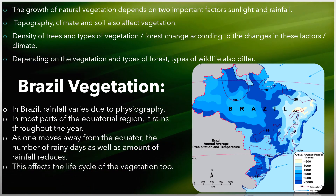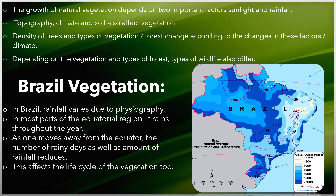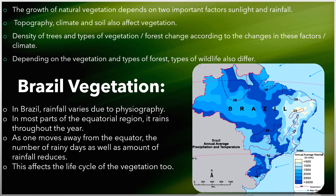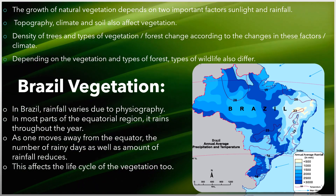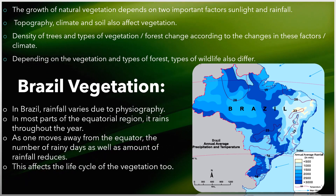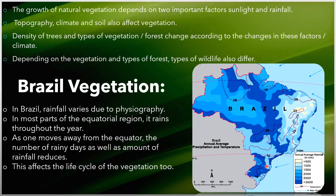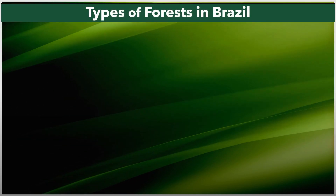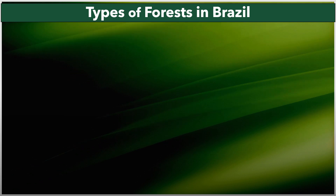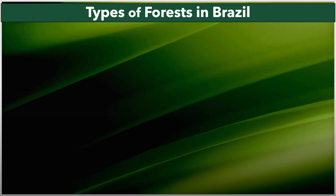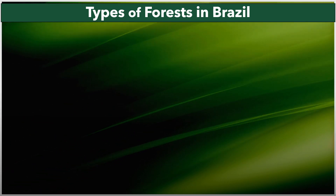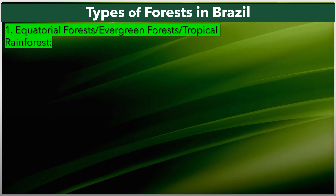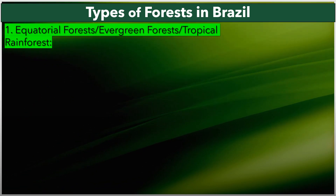This affects the life cycle of vegetation too. Physiography, rainfall, sunlight, and distance from the equator are important factors which affect the vegetation of Brazil. In figure 5.4 of your textbook, different types of forests in Brazil are mentioned. The first type of forest found in Brazil is known as equatorial forest, also known as evergreen forest or tropical rainforest.